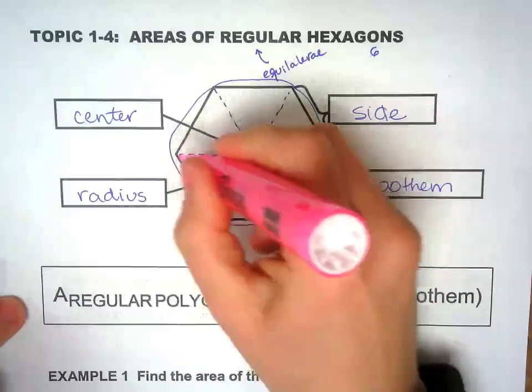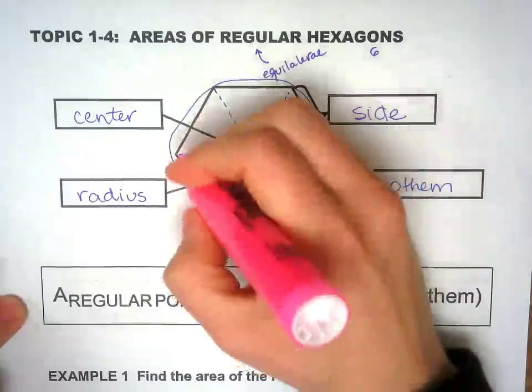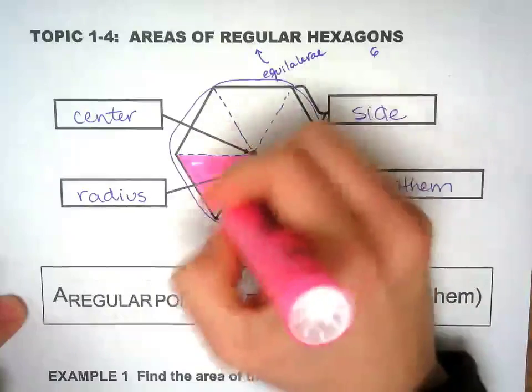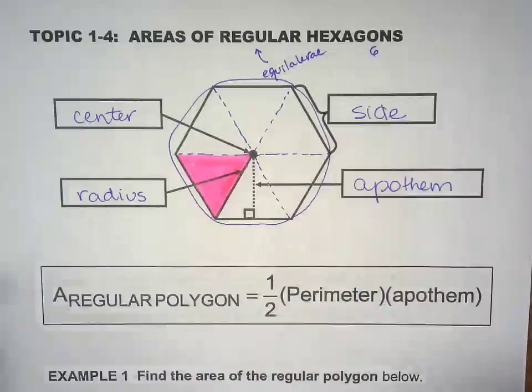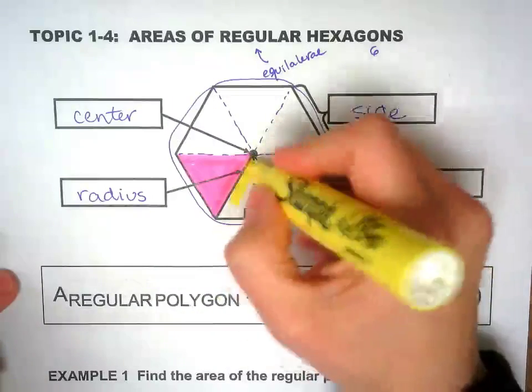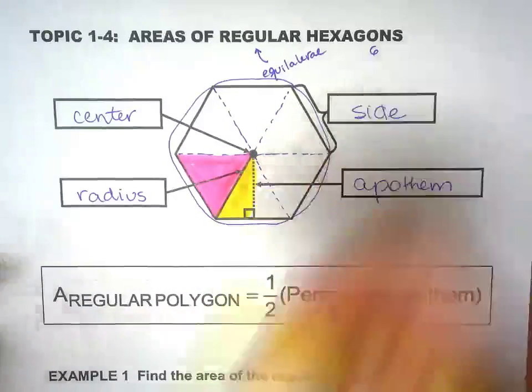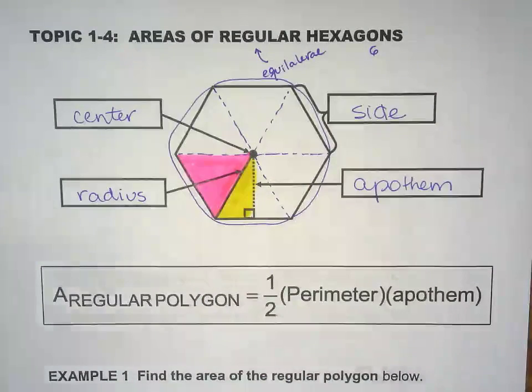We have the pink triangle, which is one of the six. And if you were to cut that pink triangle in two, you would get the yellow triangle. So the yellow triangle is half of the pink triangle.